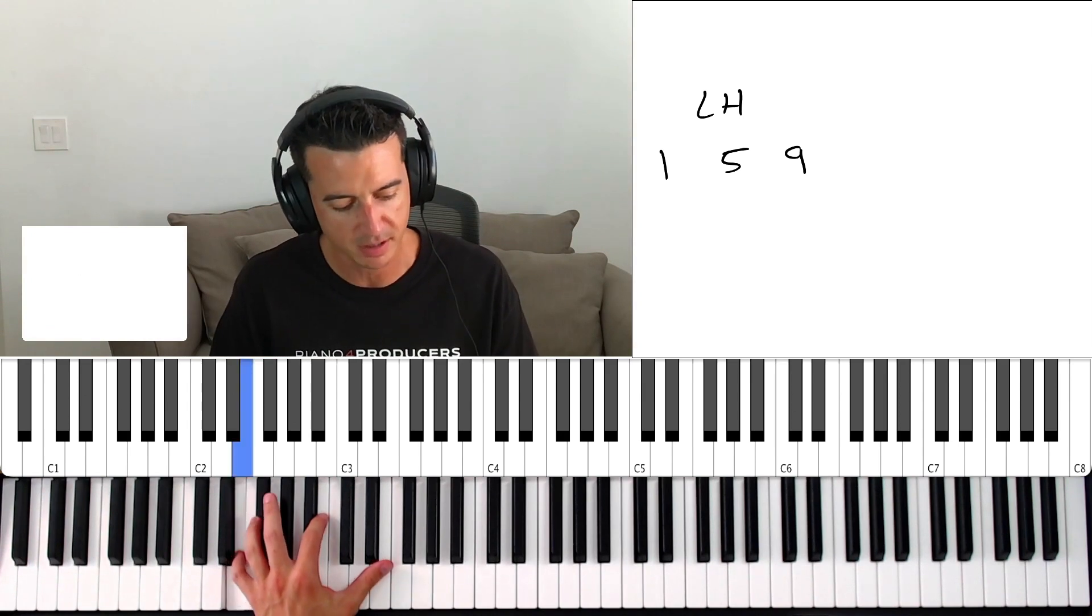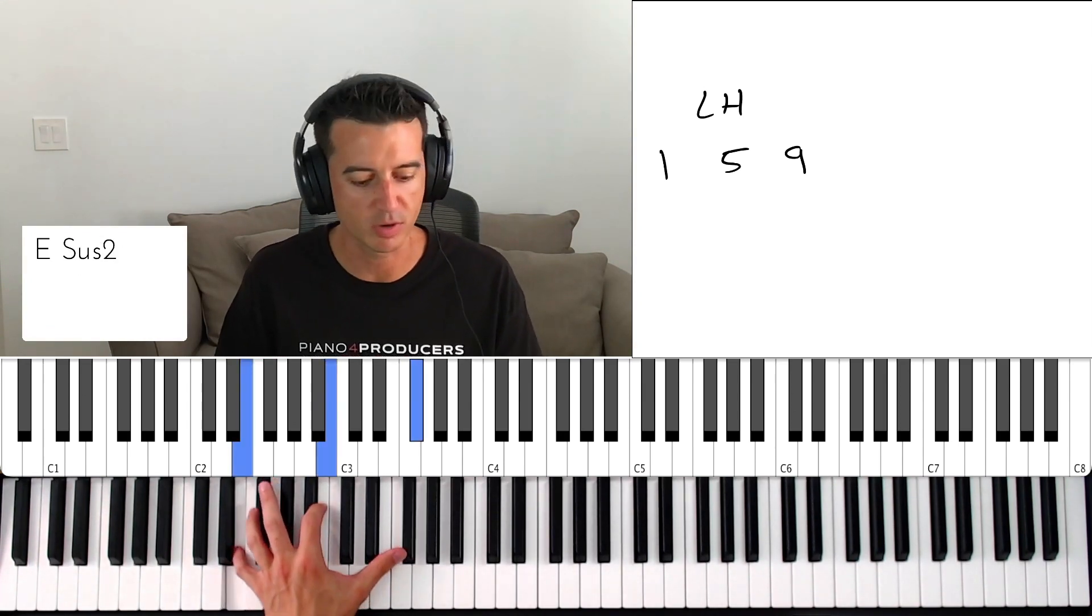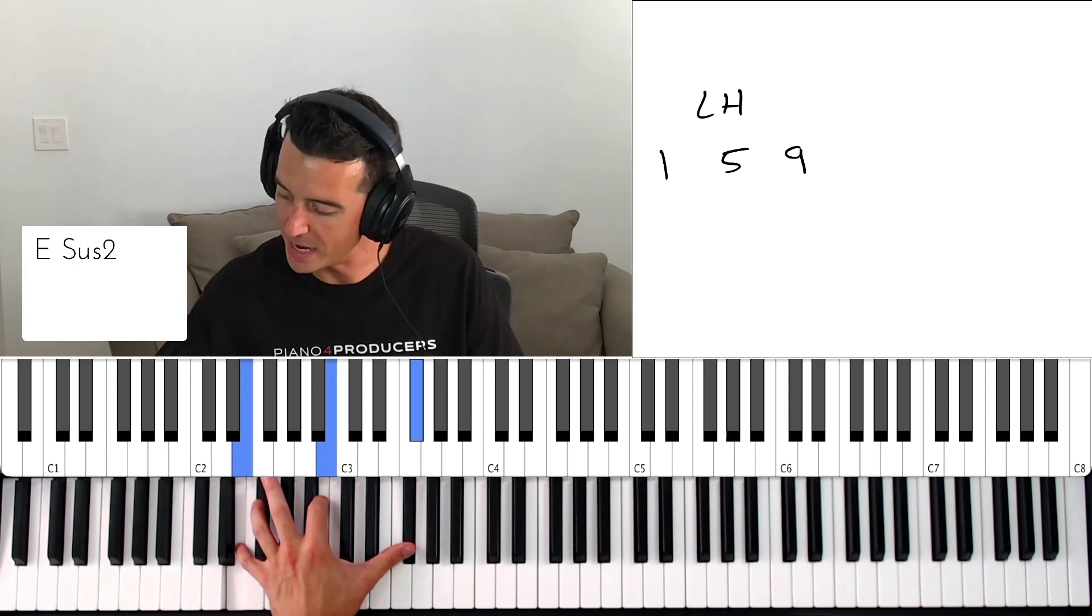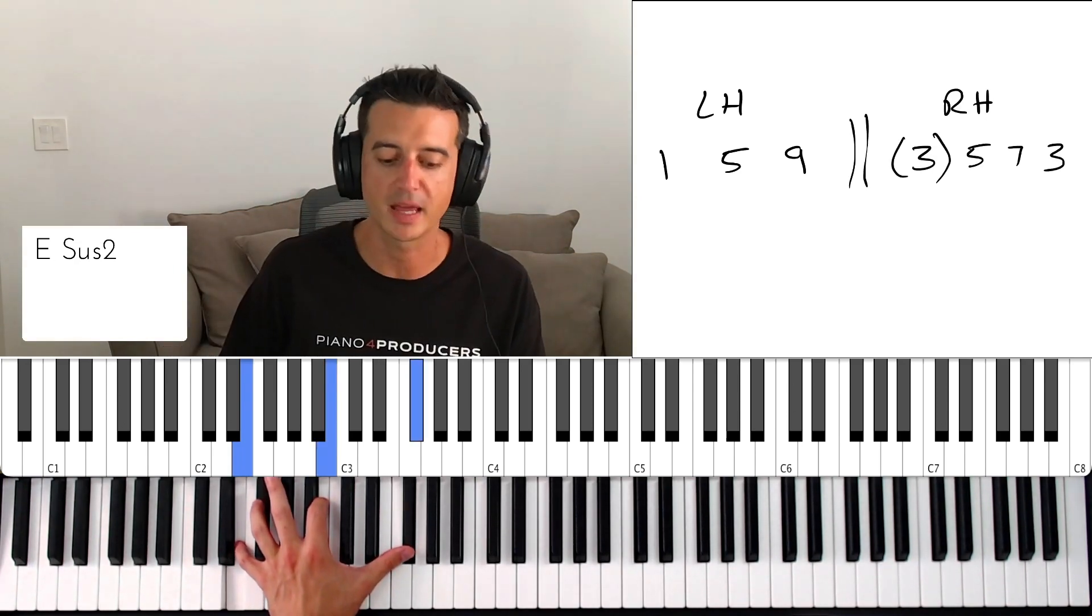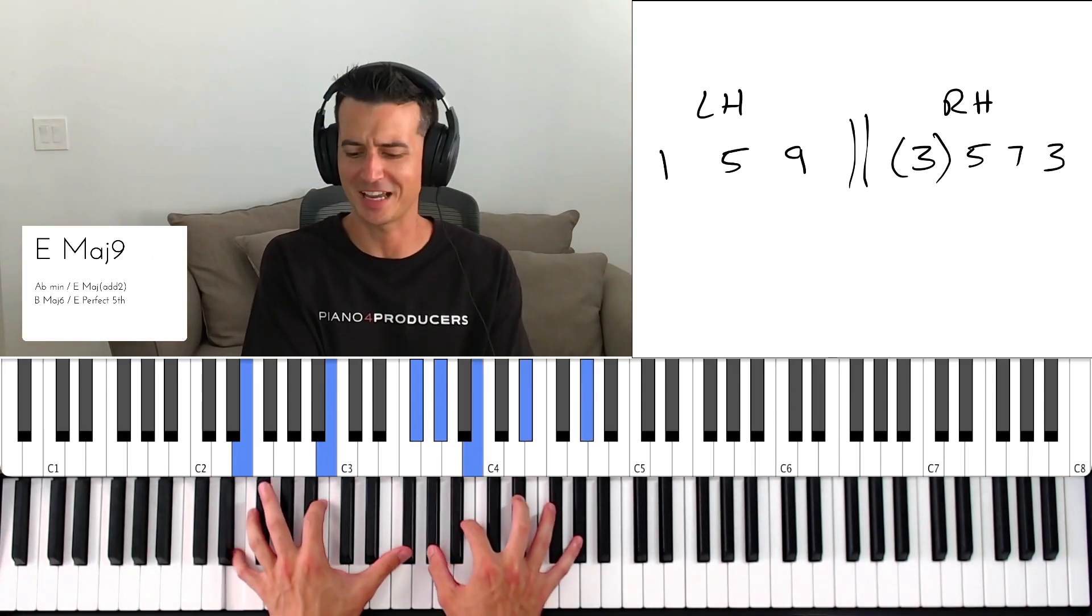Here's the voicing. In the left hand we're going to play the first, the fifth, and the ninth. Really simple, right? One, five, nine. And then in the right hand, we're going to play three, five, seven, and three again. And that gives us this sound.